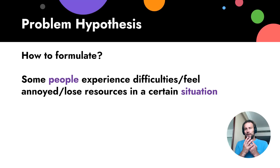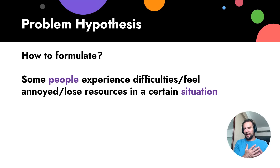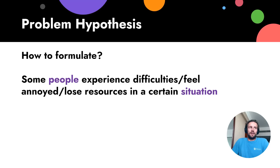Once one big problem is solved, other smaller problems can appear. For example, 10 or 20 years ago, there was a problem of how to communicate online. Then Skype appeared. And Viber, WhatsApp, and Telegram — lots of apps solved communication problems.